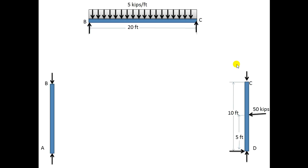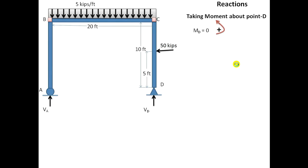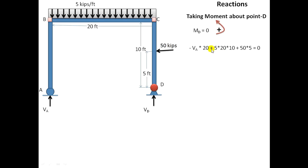I will find the reactions by taking the moment about point D, with counterclockwise moment as positive. VA into 20 creates a clockwise moment about point D. The UDL of 5 kN/m multiplied by the span and by half the span gives the moment due to UDL, which creates a counterclockwise moment about D, taken as positive. The 50 kN load at an arm of 5 m also creates a counterclockwise moment about D.